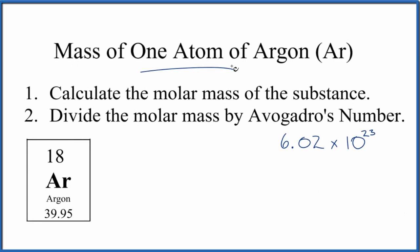Let's find the mass of one atom of argon, that's Ar. All we're going to do is find the molar mass of the substance. In this case, it's the atomic mass because we're dealing with an atom. That's right here, the average atomic mass. And we divide that by Avogadro's number.